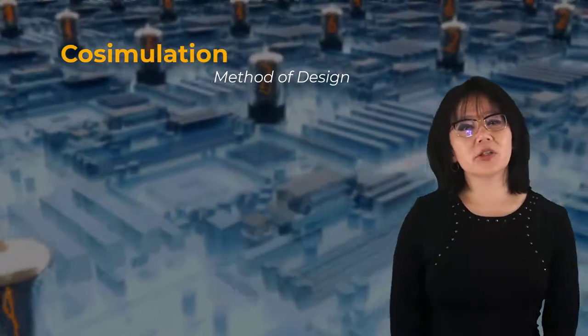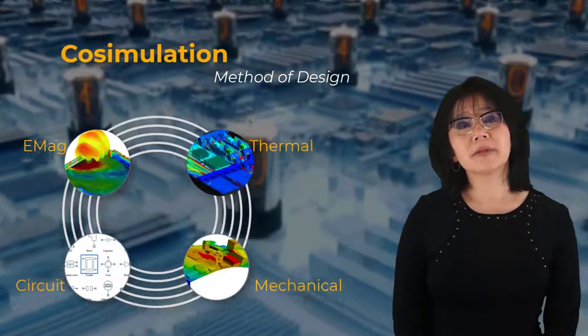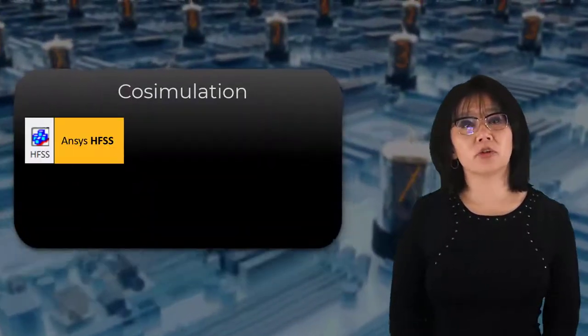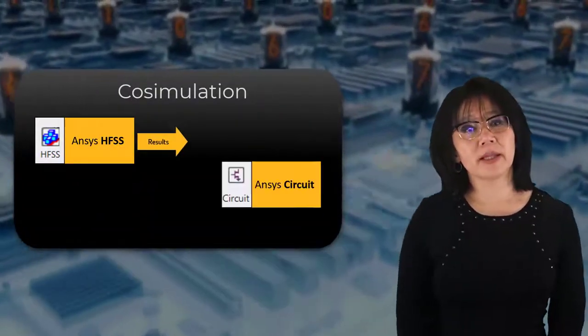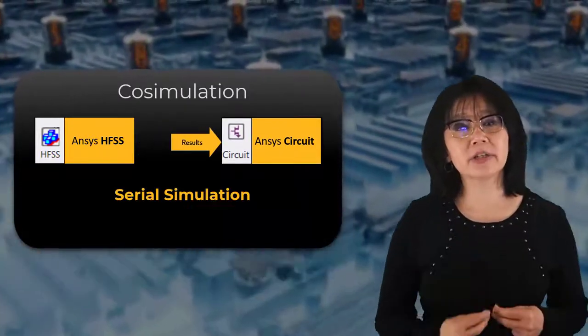By definition, the method of co-simulation is when two or more simulation types are performed to simulate a whole system. You can have one simulation result fed into another simulation tool, a cascaded scenario, a serial simulation.